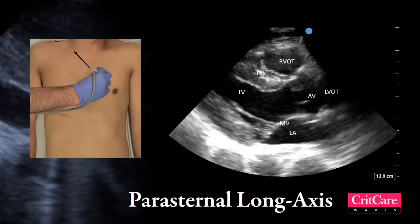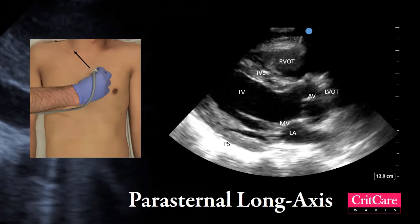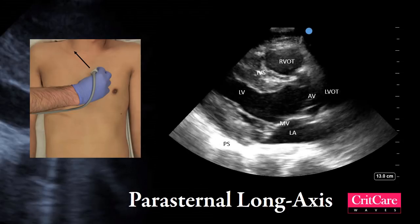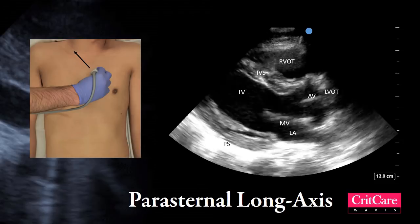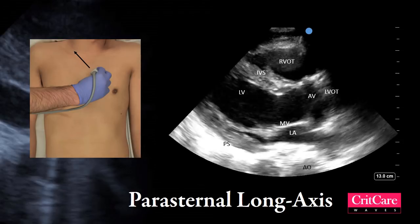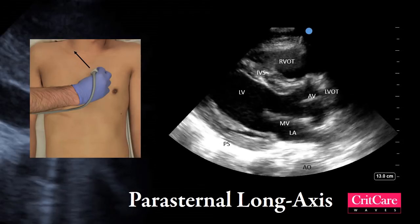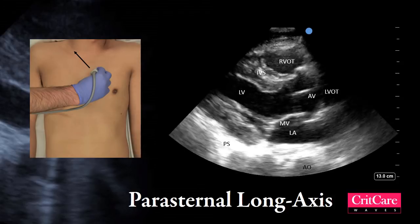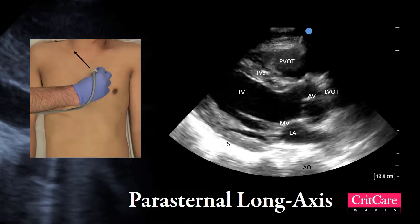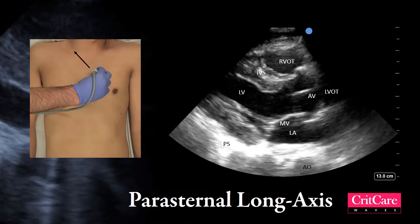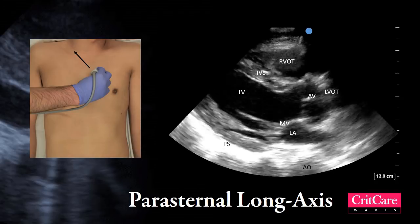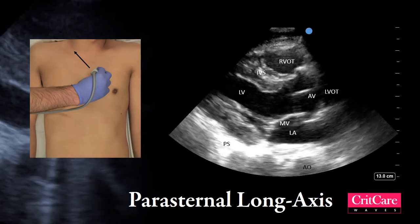The pericardial stripe is the hyperechoic shadow seen in the far field. The descending aorta can be seen in the far field near the left atrium. This is an important anatomic structure that differentiates pleural effusions from pericardial effusions. A good parasternal long axis image is obtained when all of these structures are visualized in the same plane.